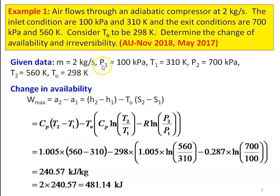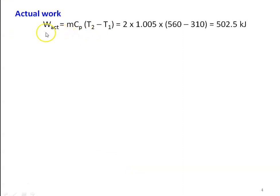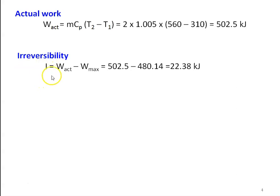For mass = 2 kg, the change in availability W_max = 2 × 240.57 = 481.14 kJ. The actual work W_actual = MCp(T2 − T1) = 2 × 1.005 × (560 − 310) = 502.5 kJ. Irreversibility I = W_actual − W_max = 502.5 − 481.14 = 22.38 kJ. So the irreversibility is 22.38 kJ.